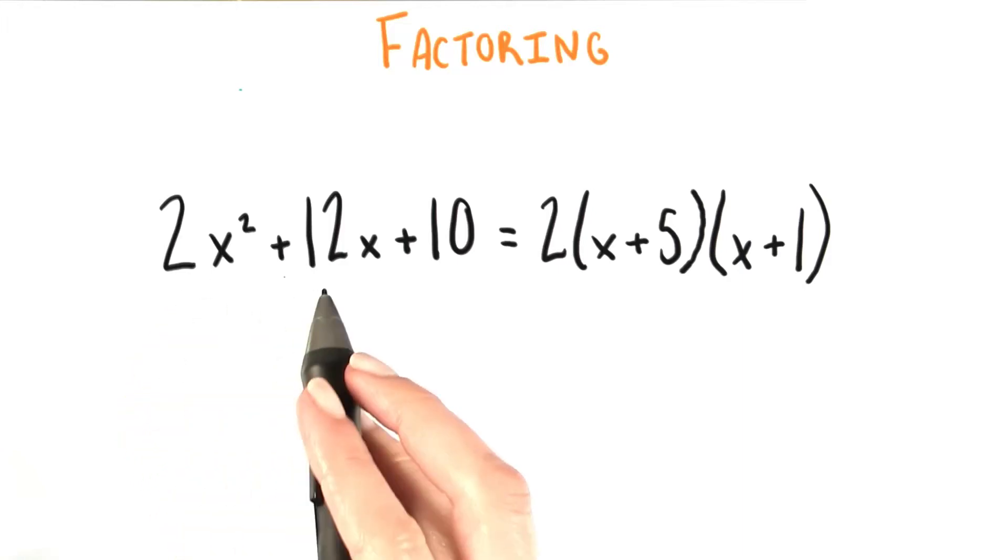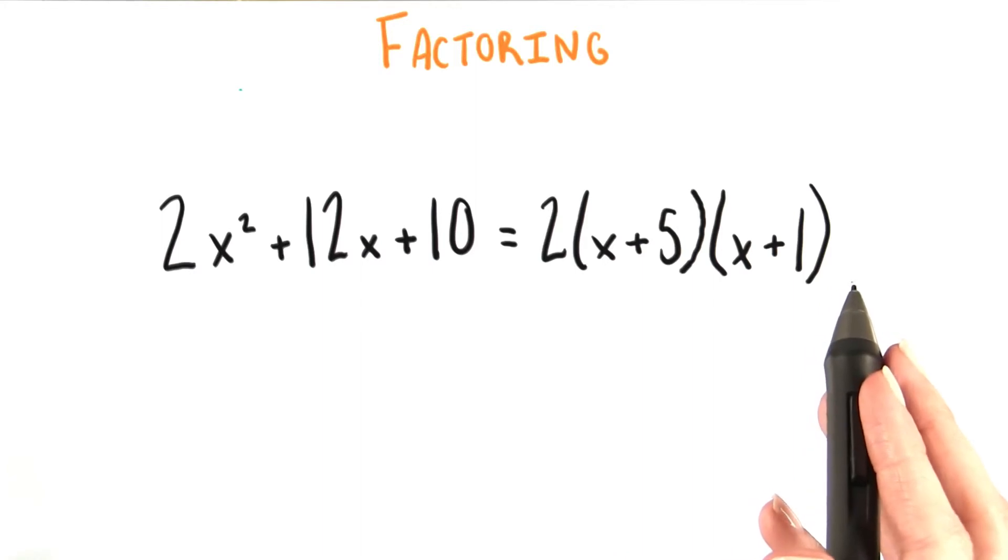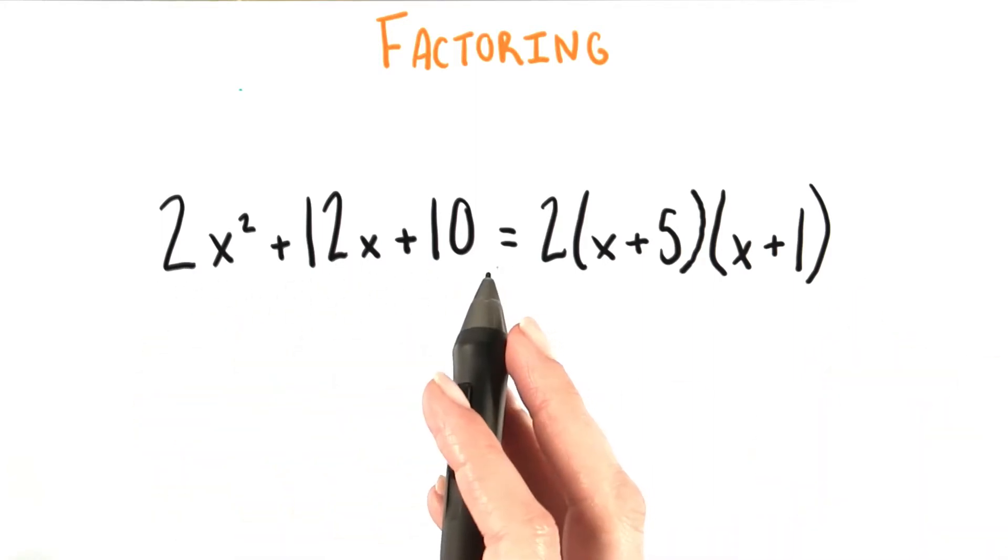With the polynomial 2x² + 12x + 10, we got really lucky in how we got to factor because there was a common factor of 2 between all three of these terms.